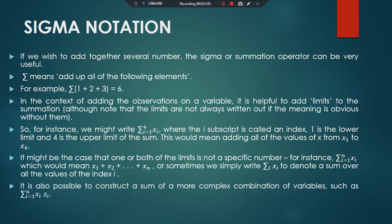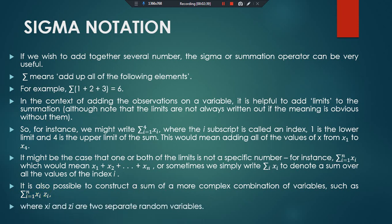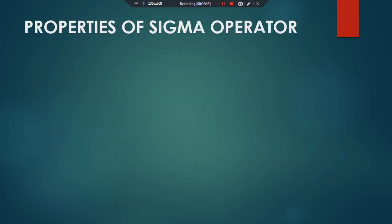It is also possible to construct a sum of a more complex combination of variables. For example, if we have two variables in a sigma notation or summation form, then sigma with i from one to n of x_i times z_i, where x_i and z_i are two separate variables.